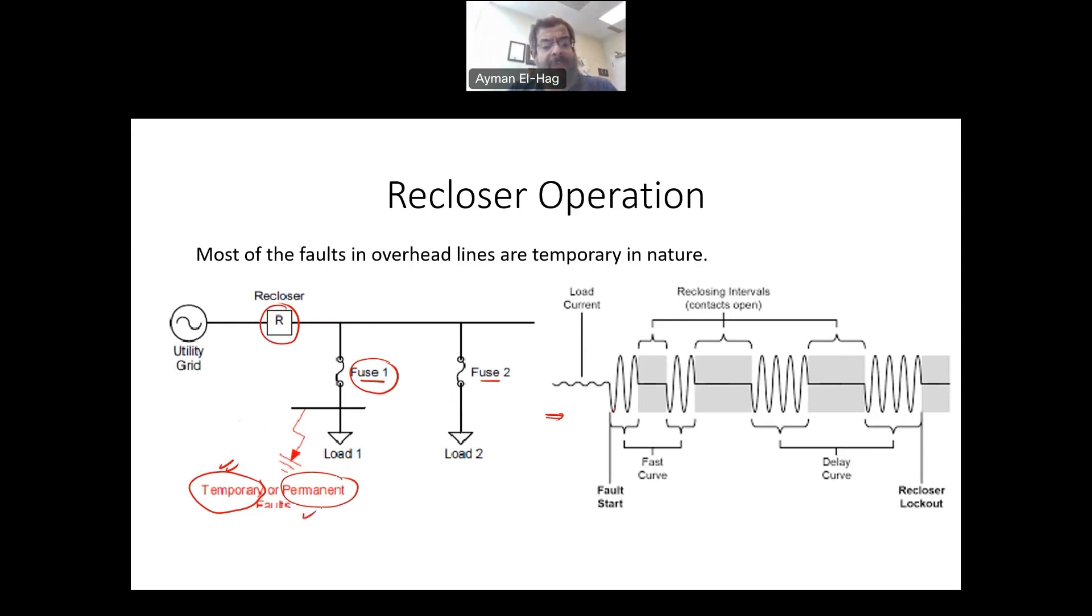Now let's assume that the fault is permanent, a short circuit permanent in the system. Now again, the Recloser will do the same thing. It will try twice, open, close, open, close very fast to protect the fuse. Now after the second time,